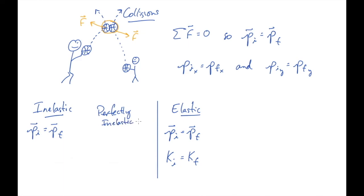Perfectly inelastic means that two objects collide and they stick together — they stick together so that after the collision, the two objects travel as one. That's what's meant by perfectly inelastic: they collide and stick together.